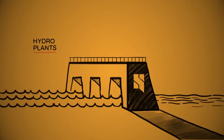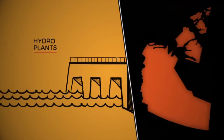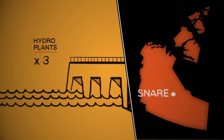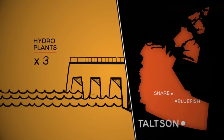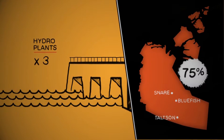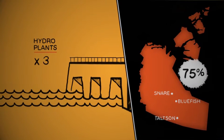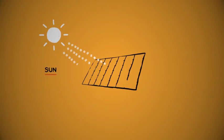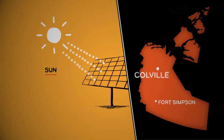Hydrogeneration converts flowing water into electricity. NTPC has three hydroelectric systems, located at Snare, Bluefish, and Tolson, that generate 75% of the territory's power. That's 75% renewable energy. Solar is also used to generate electricity in Fort Simpson and Coeville Lake.